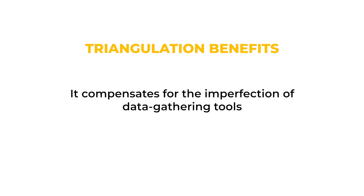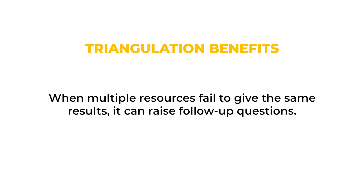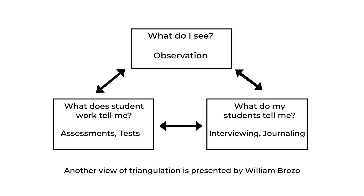Triangulation provides the following benefits. First, it compensates for the imperfection of data gathering tools. Second, when multiple techniques give the same results, it can increase confidence in the results. Third, when multiple resources fail to give the same results, it can raise follow-up questions. Another view of triangulation is presented by William Bruso in 2011. As illustrated in the diagram, there are three methods used in data collection. First, observation — this answers the question: what do I see as a researcher? The second method is interviewing or journaling — what do my students tell me? And the third is quantitative data, assessments and tests — this answers the question: what does student work tell me?